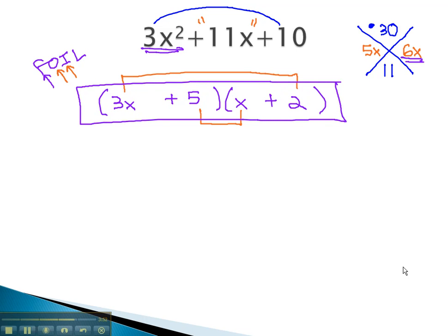3x plus 5 times x plus 2, when multiplied out, are the factors used to get 3x squared plus 11x plus 10. In the next video, we will take a look at doing one more example.